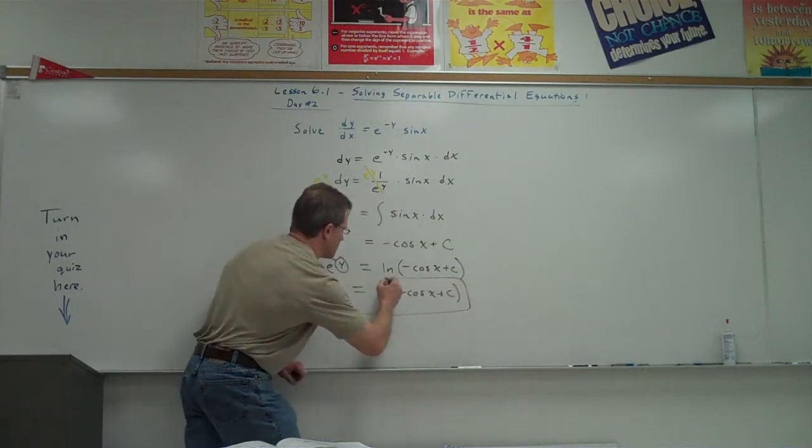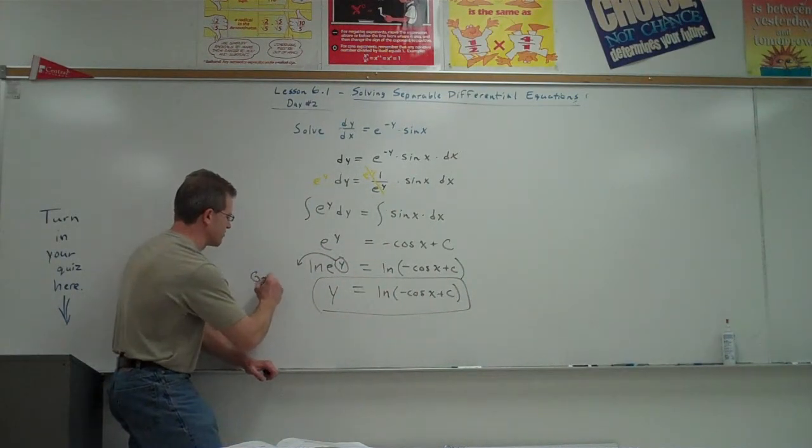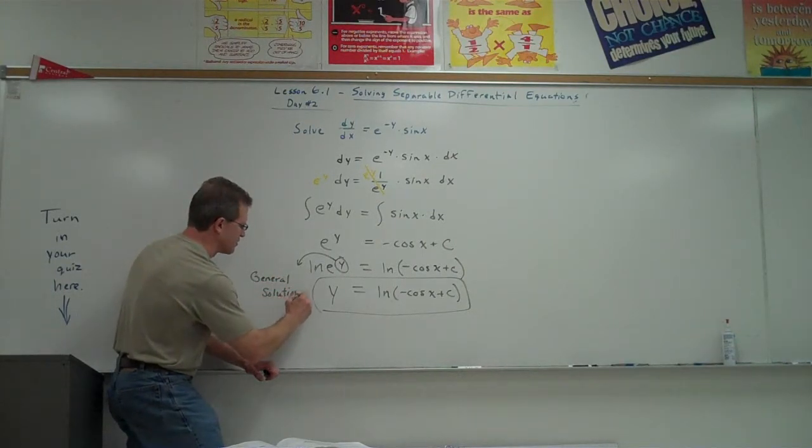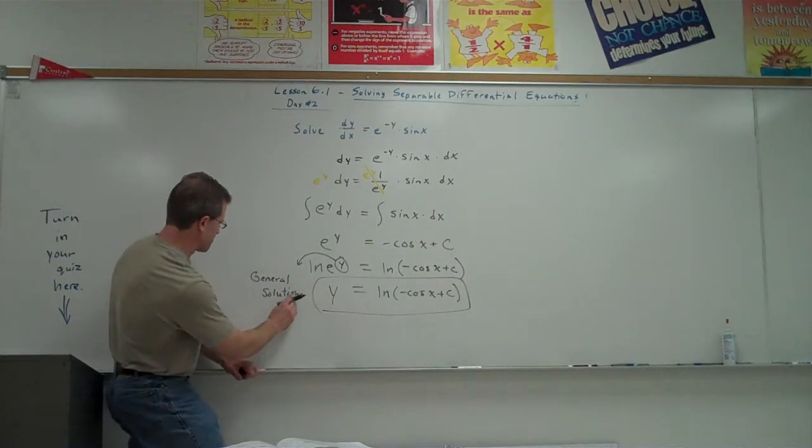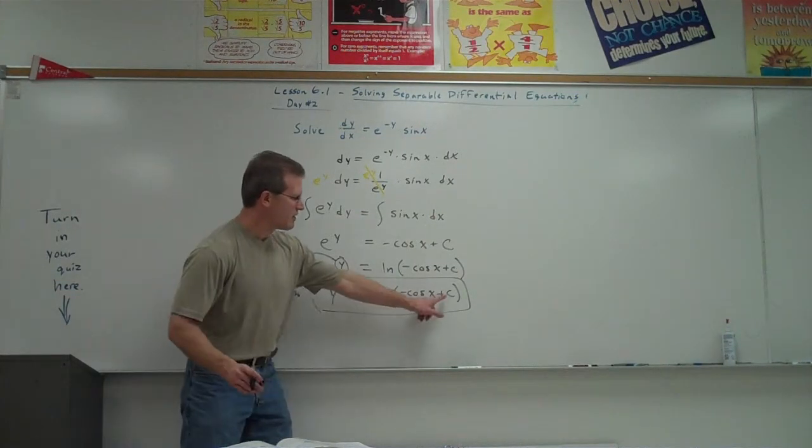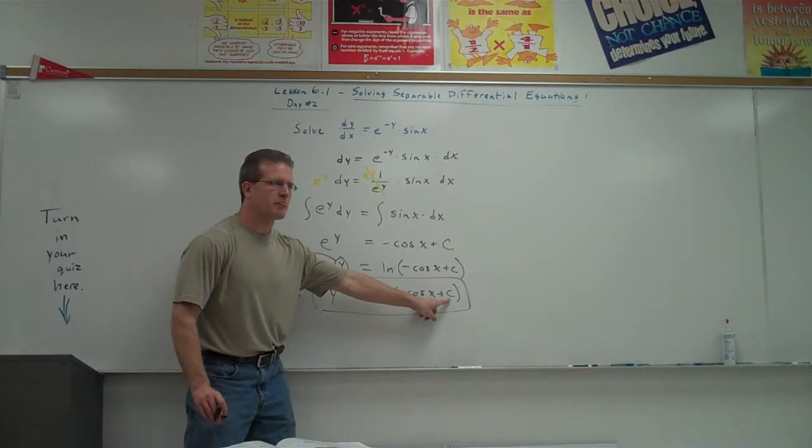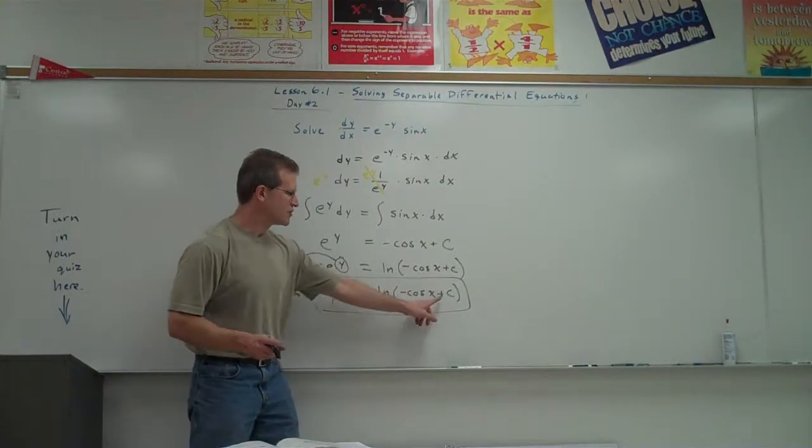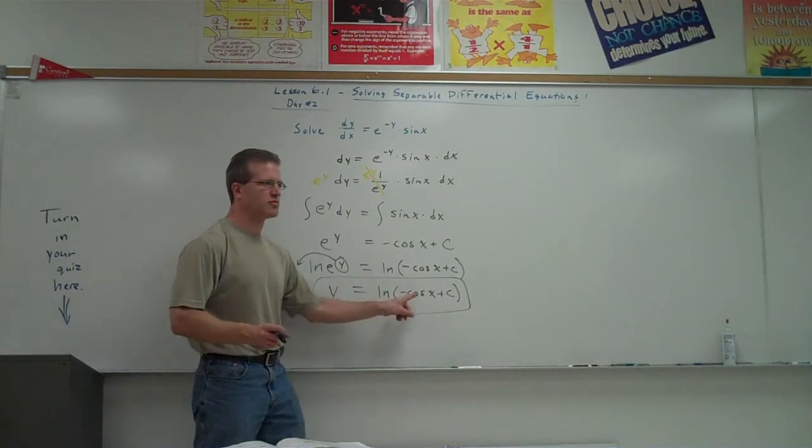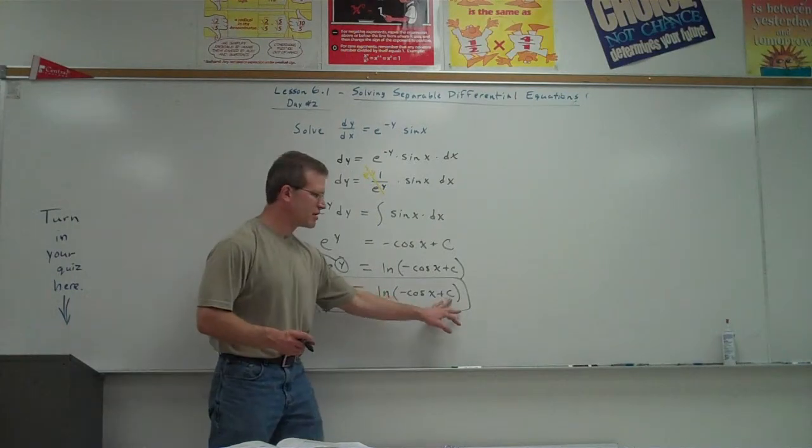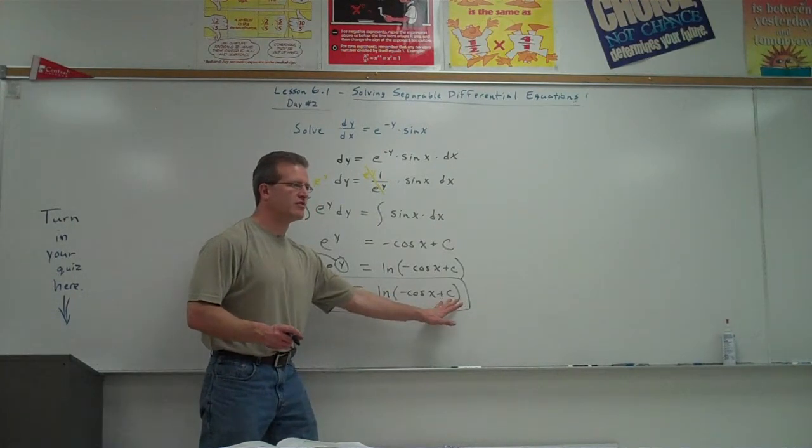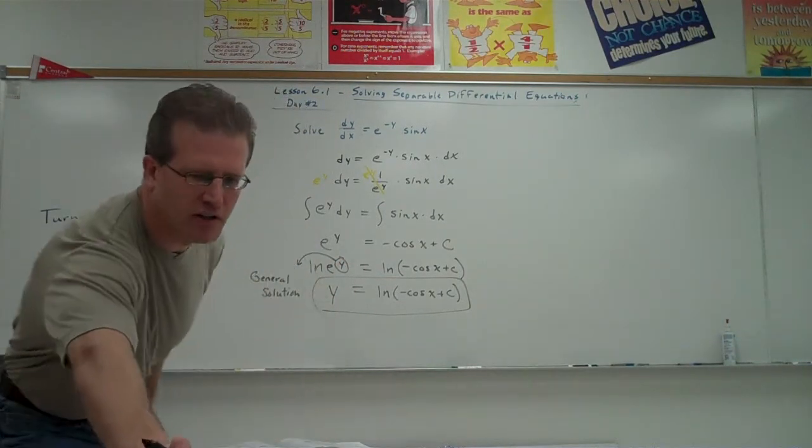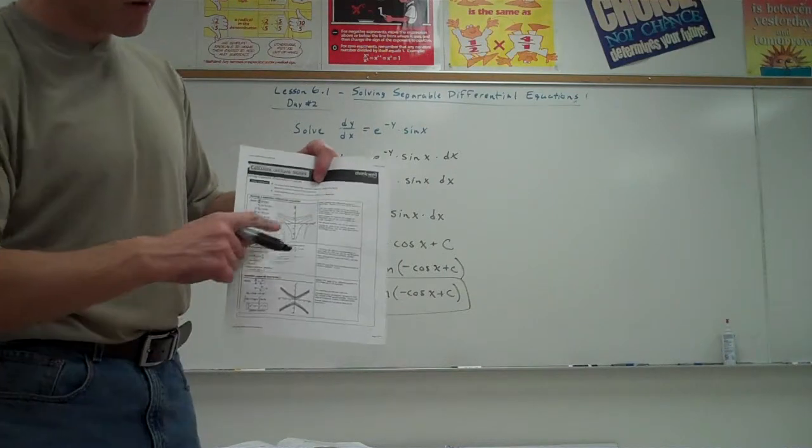That's what we call the general solution to the problem. It's a general solution because we don't have the constant yet. We don't know what the constant is. If you look at your note sheet that I gave you from the video, as you change the value of c, this curve will change when you graph it. So there's an infinite number of constants you could put here.